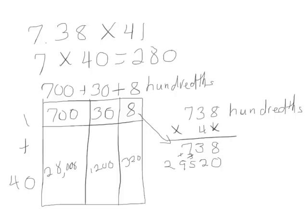29,520 comes directly from this part of our area model. We add these together. 8 plus 0 is 8, 3 plus 2 is 5, 7 plus 5 is 12, 9 plus 1 is 10. And we have 30,258 hundredths.